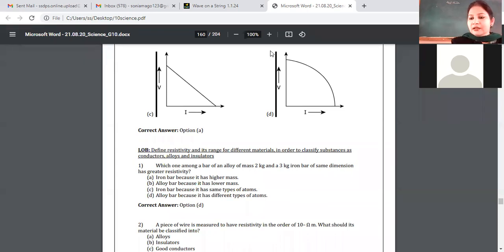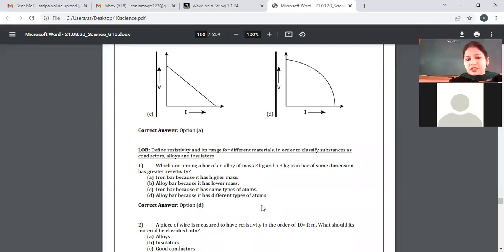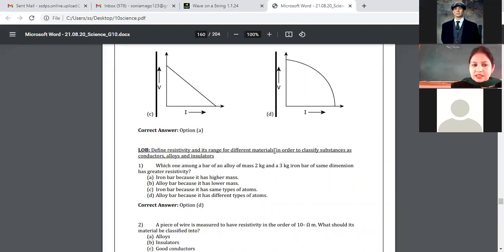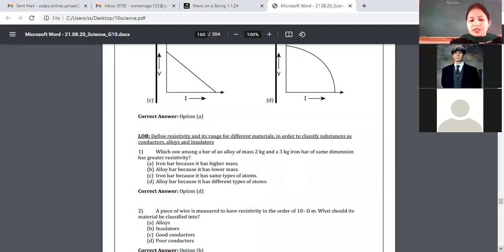Who will tell the answer? Raise hand, whosoever knows the answer. You can easily make out depending upon the value of resistivity, is it more or less? 10 raised to 19 ohm meter is very large value of resistivity. Yes, Banu? Option B, insulator. Yes, this is insulator. They are having very high value of resistivity. So answer is B.